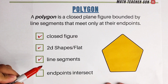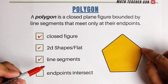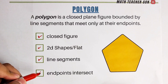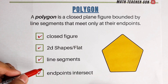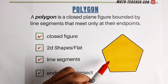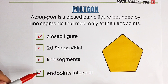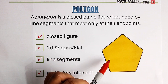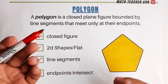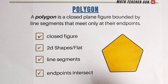And lastly, are the endpoints of these line segments intersecting? Yes. So considering whether this one is a polygon or not, we need to have all these characteristics embodied in this kind of figure. So we are good — let's have more examples.